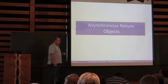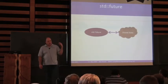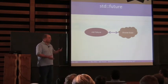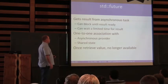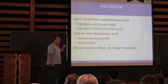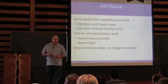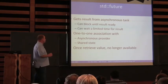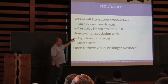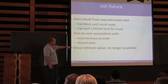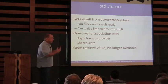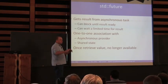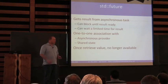We'll start with these asynchronous return objects. With std::future, you have a unique object that represents the result coming from an asynchronous task — a one-to-one correlation. Its whole purpose is to get you that result back. You can block on it until the result's ready, or wait for a limited time — you can say you're willing to wait for just a few seconds and then get back to something else. There's a one-to-one association with the provider as well as with that shared state. An interesting characteristic of std::future is that once you get its value — once you get the result from your asynchronous task — you can't get it again, so you'd better save it if that's important to you.